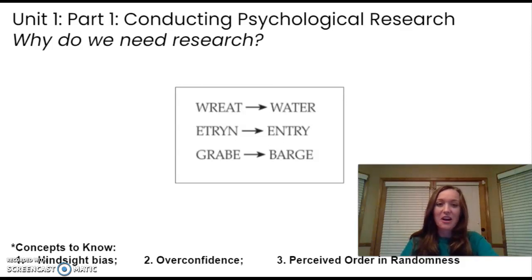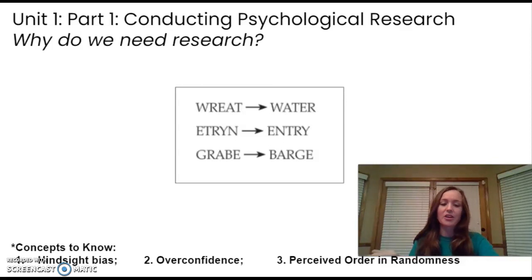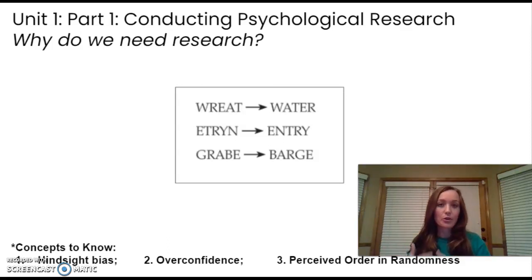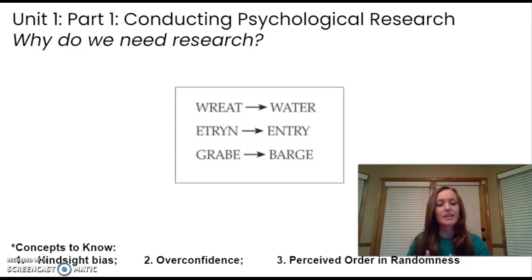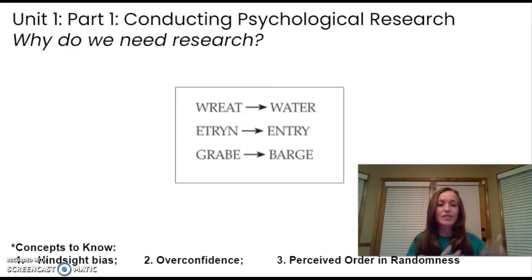Another researcher, Philip Tetlock, studied the same idea of overconfidence. He surveyed over 27,000 people considered experts in world events and asked them to predict future world events. The experts believed they would be about 80% correct, but when those events played out, they were actually less than 40% correct.